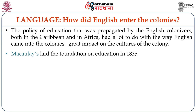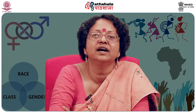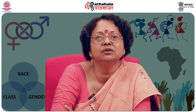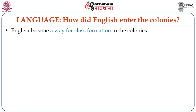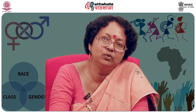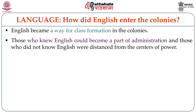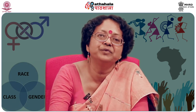Macaulay wanted to create a class of Indians — because this policy was first started in India and then applied to Africa and the Caribbean — who were English in their thoughts and ideas, who would be a buffer between the colonial ruler and the colonized ruled. English became a way of class formation in the colonies. A distinction was created between those who learned and knew English and therefore became part of the colonial administration.